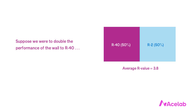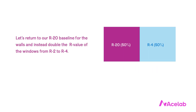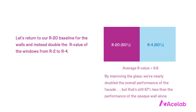Would doubling the wall insulation have a significant effect on overall thermal performance? It would bring our average R value from 3.6 to 3.8 — a lot of work for barely a rounding error of added performance. But if we return to our baseline R20 wall and instead double the R value of the windows from R2 to R4, we get an average R value of 6.6. By improving the glass, we've nearly doubled the overall performance of the facade, though we're still 67% less than the performance of the opaque wall alone.